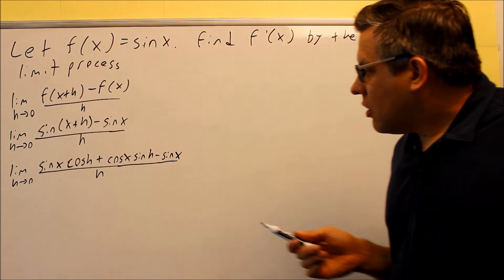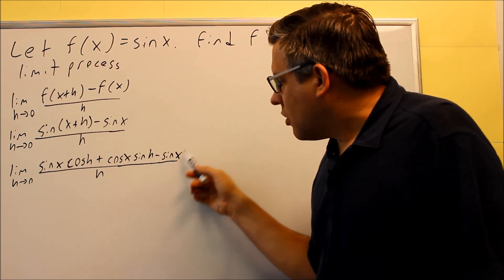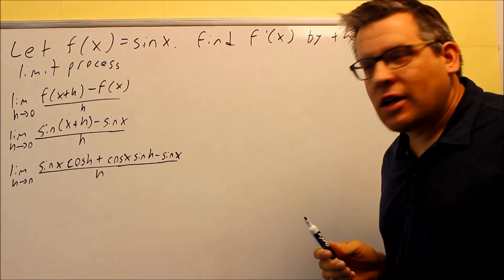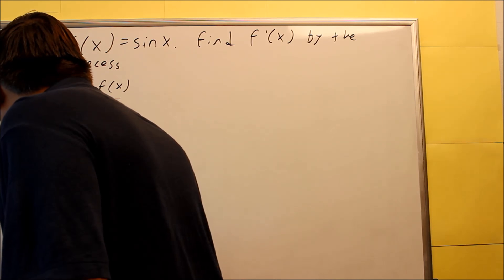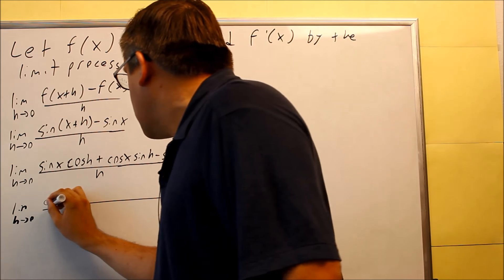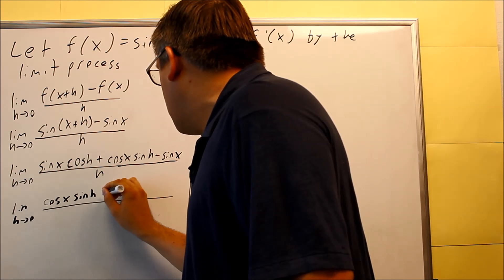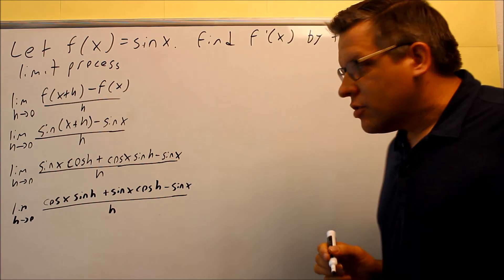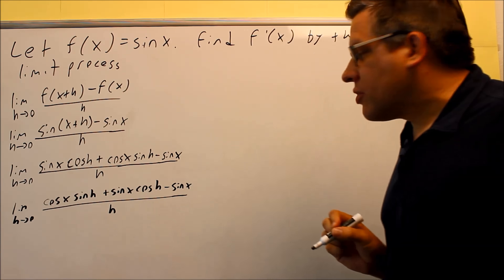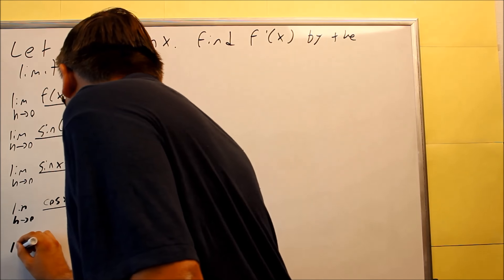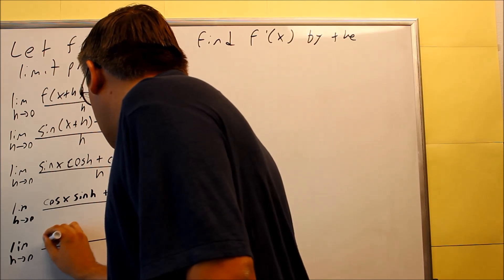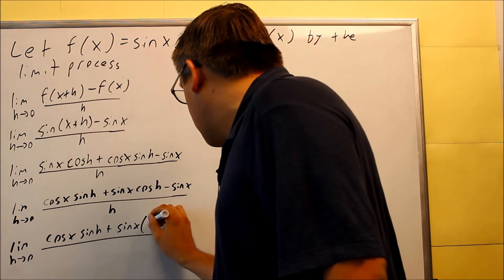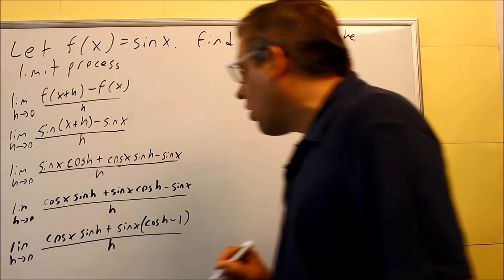Next, I need to look for things I can factor. I have a sine x here, so I'm going to put that term next to this one because there's a common factor of sine x. So taking the limit as h goes to zero, I'll switch the terms around: cosine x sine h, plus sine x cosine h minus sine x, all over h. This has a like term, so I can factor out a sine x, leaving us with cosine x sine h plus sine x times the quantity cosine h minus 1, all over h.